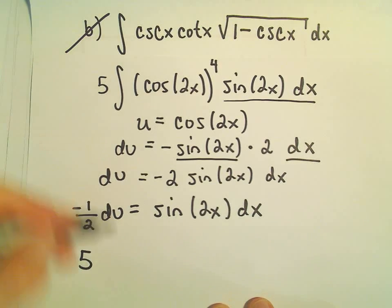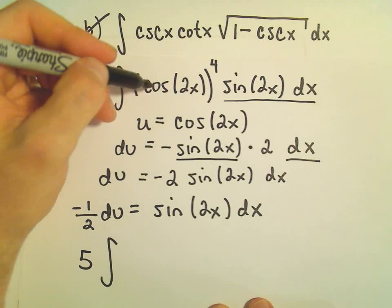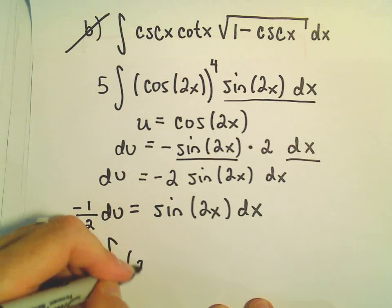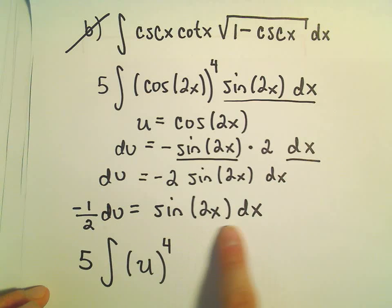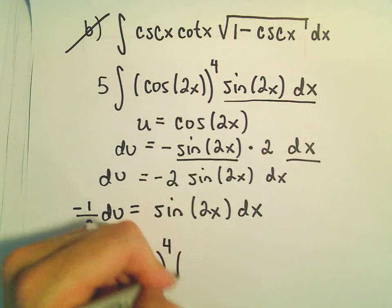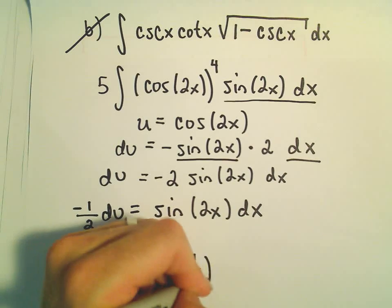So there's our original 5. There's our integral. Cosine of 2x, that's what we're calling u. So we would have u to the fourth power. Sine 2x dx, again, that's what we're going to replace with the negative 1 half times du.